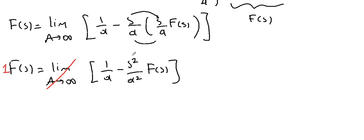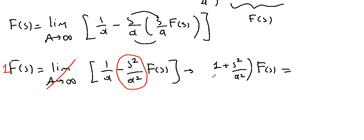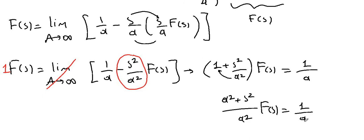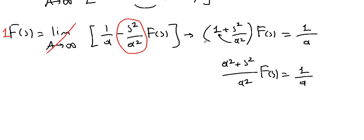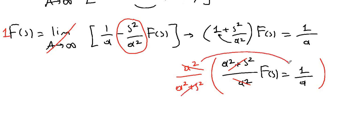We have 1 times f of s on the left and negative s squared over a squared times f of s, so we merge them: 1 plus s squared over a squared times f of s equals 1 over a. Combining the fraction on the left gives a squared plus s squared over a squared times f of s equals 1 over a. Multiplying both sides by a squared over a squared plus s squared, we obtain f of s equals a over a squared plus s squared.